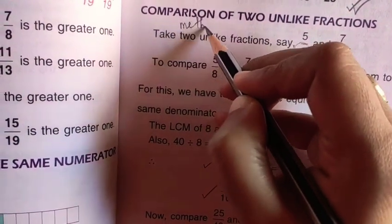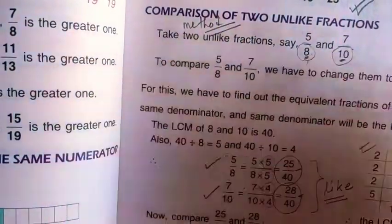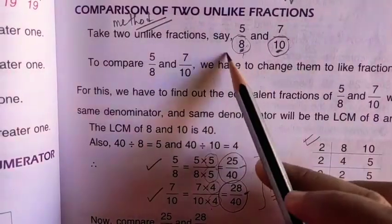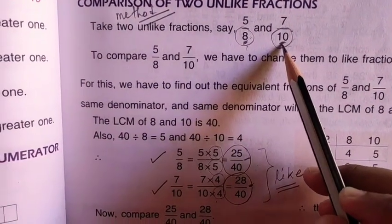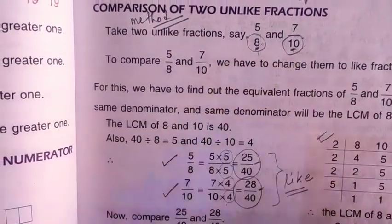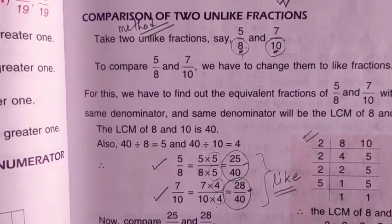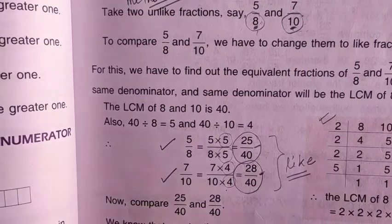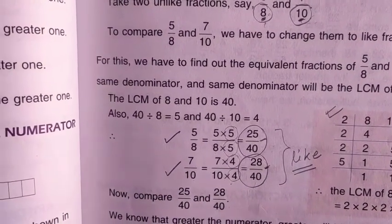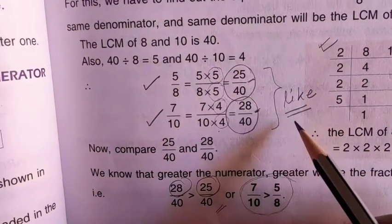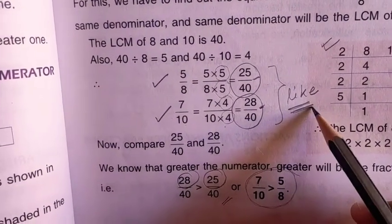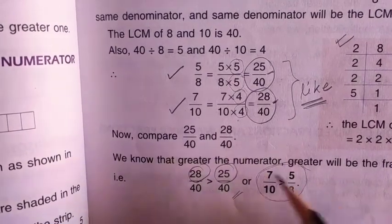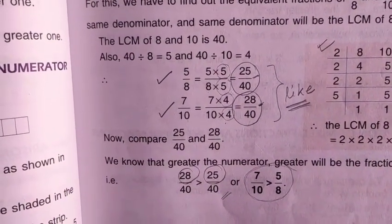To summarize the first method: we convert the two unlike fractions to like fractions by finding the LCM of the denominators, then converting each denominator to the LCM by multiplying both numerator and denominator by the required number. After that, we simply compare the numerators of the like fractions to get the answer.